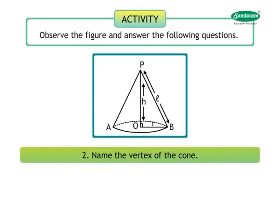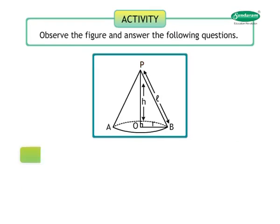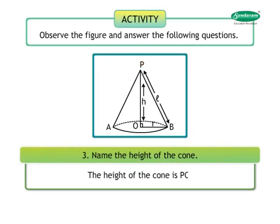Question 2: Name the vertex of the cone. Answer: The vertex of the cone is P. Question 3: Name the height of the cone. Answer: The height of the cone is PO.